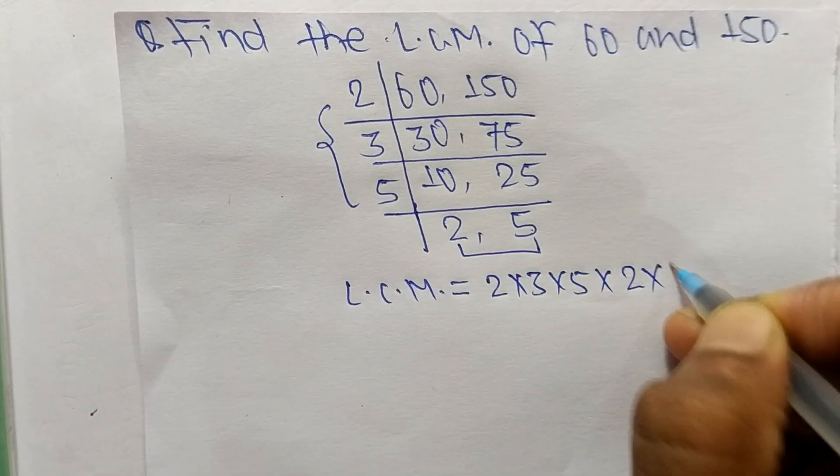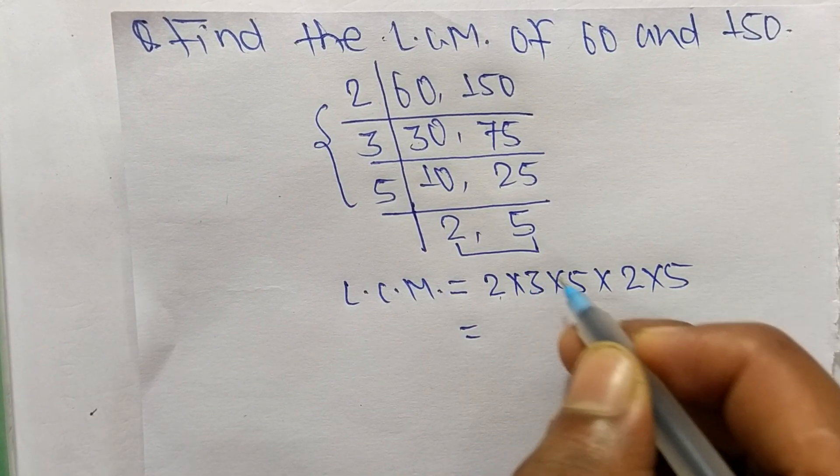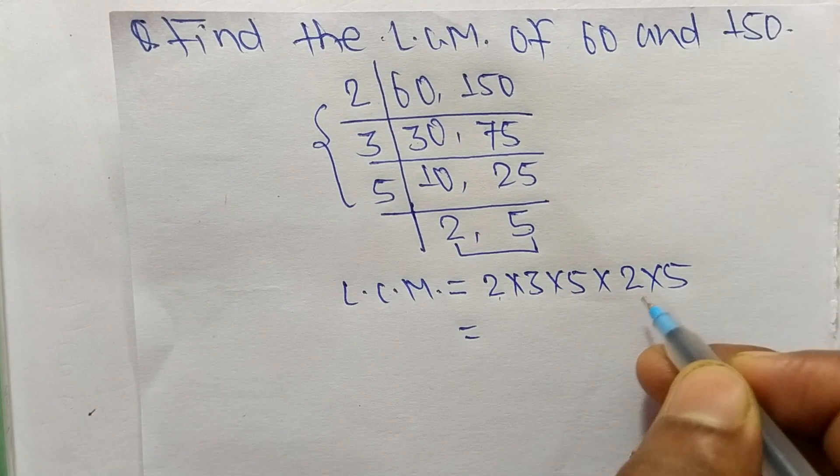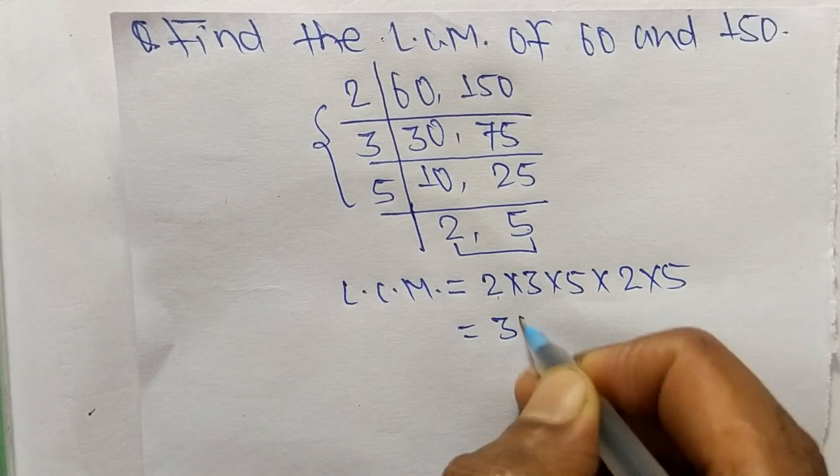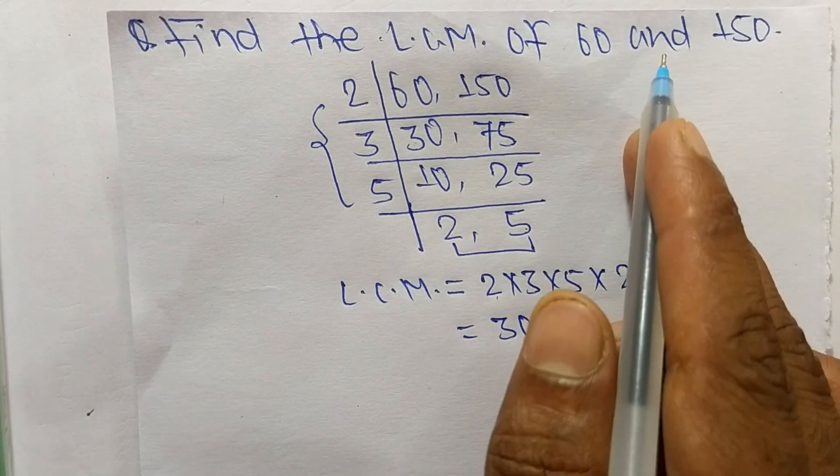2 times 3 equals 6, 6 times 5 equals 30, 30 times 2 equals 60, and 60 times 5 equals 300. So 300 is the LCM of 60 and 150.